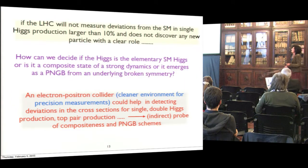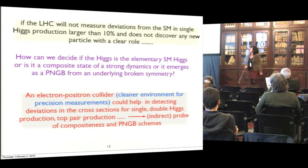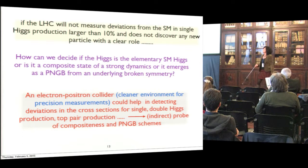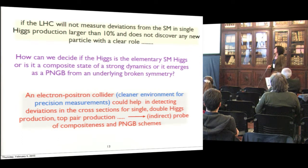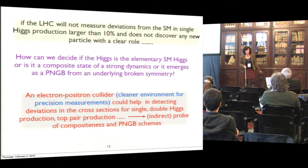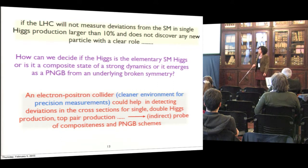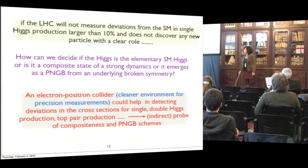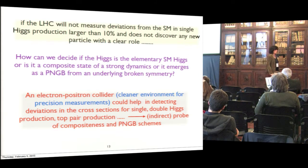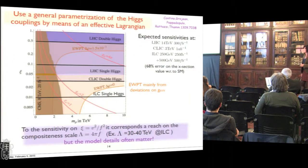If the LHC does not measure deviations from the standard model larger than 10% and does not discover any new particle, how can we decide if the Higgs is elementary or a composite state of a strong dynamics? In that sense, an electron-positron collider with a cleaner environment for precision measurements could help in detecting deviations, and there will be an indirect probe of compositeness in pseudo-Nambu-Goldstone boson schemes.